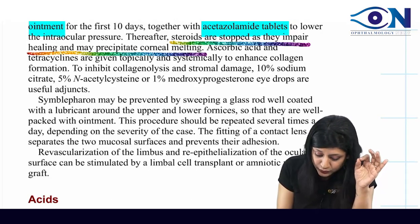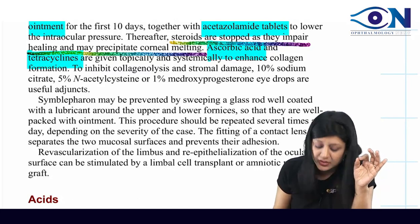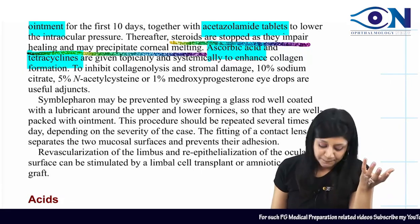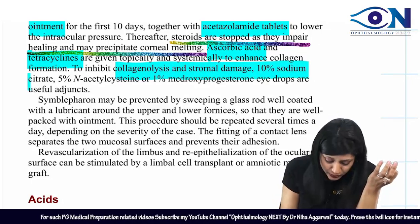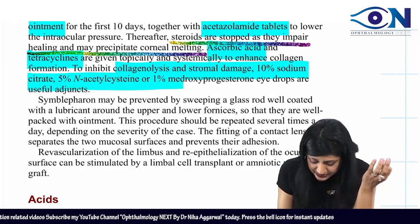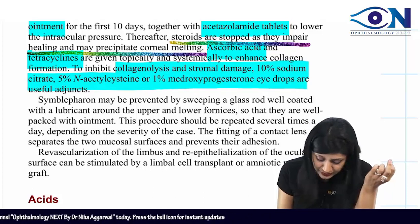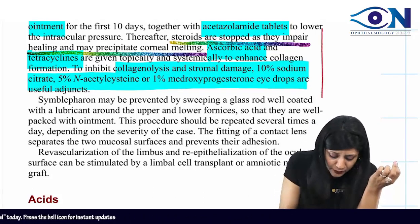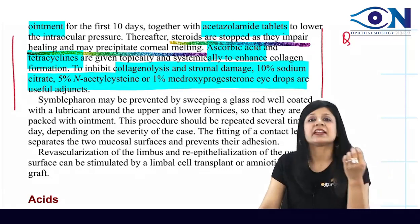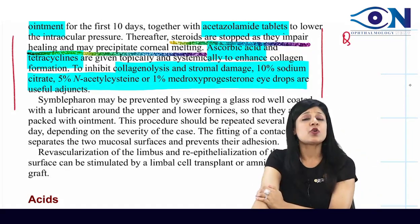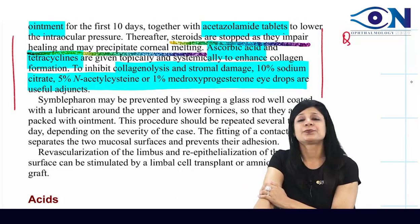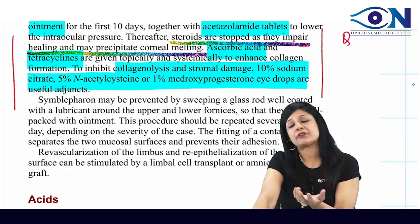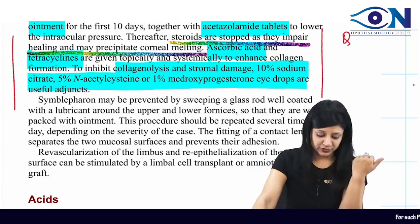Ascorbic acid (vitamin C) and tetracycline are given to help in healing. To inhibit collagenolysis and stromal damage, 10% sodium citrate, 5% N-acetylcysteine, and 1% medroxyprogesterone eye drops are also used. Tetracycline group drugs inhibit matrix metalloproteinases, providing both anti-collagenolytic and anti-proteolytic effects.